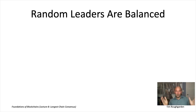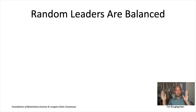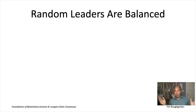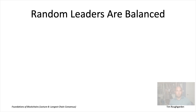For example, if you're 100-balanced, that means if you look at any stretch of 100 consecutive leaders, at least 51 of them should be honest. Similarly, if you look at any stretch of 200 consecutive leaders, at least 101 of them should be honest, and so on.